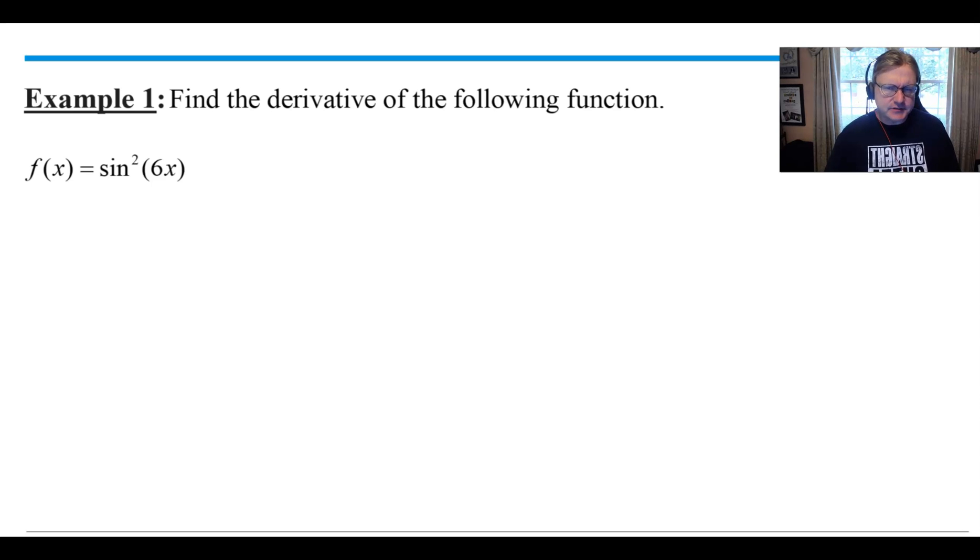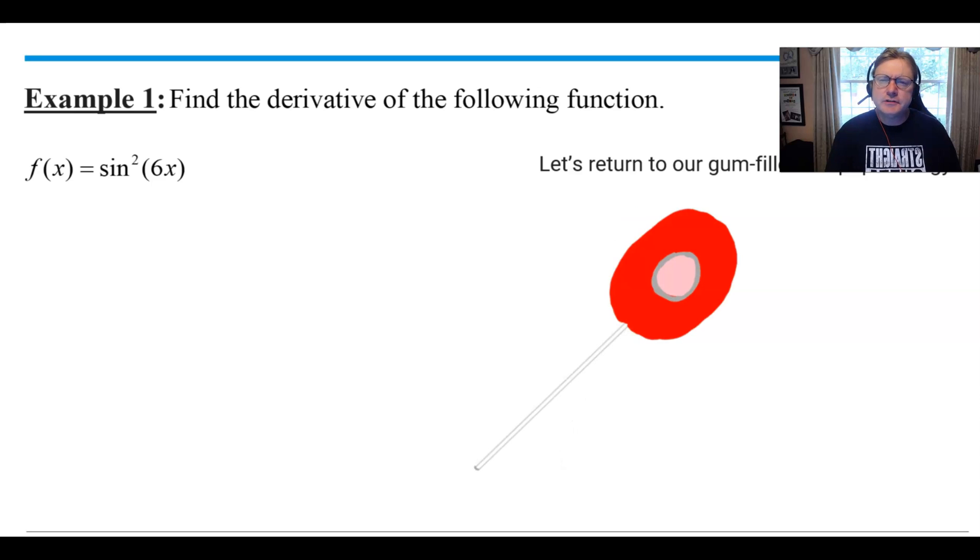We have to think about what things are going on in this problem that are going to necessitate the usage of two versions of the chain rule. We have a six residing in front of the x, which in and of itself is going to require a chain rule, but also for the first time we have the trigonometric expression that's raised to a power. So those two things together are going to create a bigger challenge. I want to return to our gum-filled lollipop analogy that I had used earlier in some previous videos.